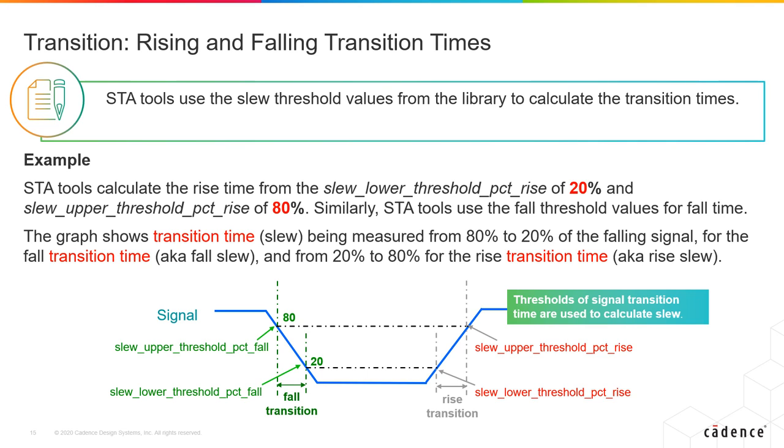In the illustration, the lower thresholds are 20%, and the upper thresholds are 80%. The rise transition is measured from 20% to 80% of the signal, and the fall transition is measured from 80% to 20%.